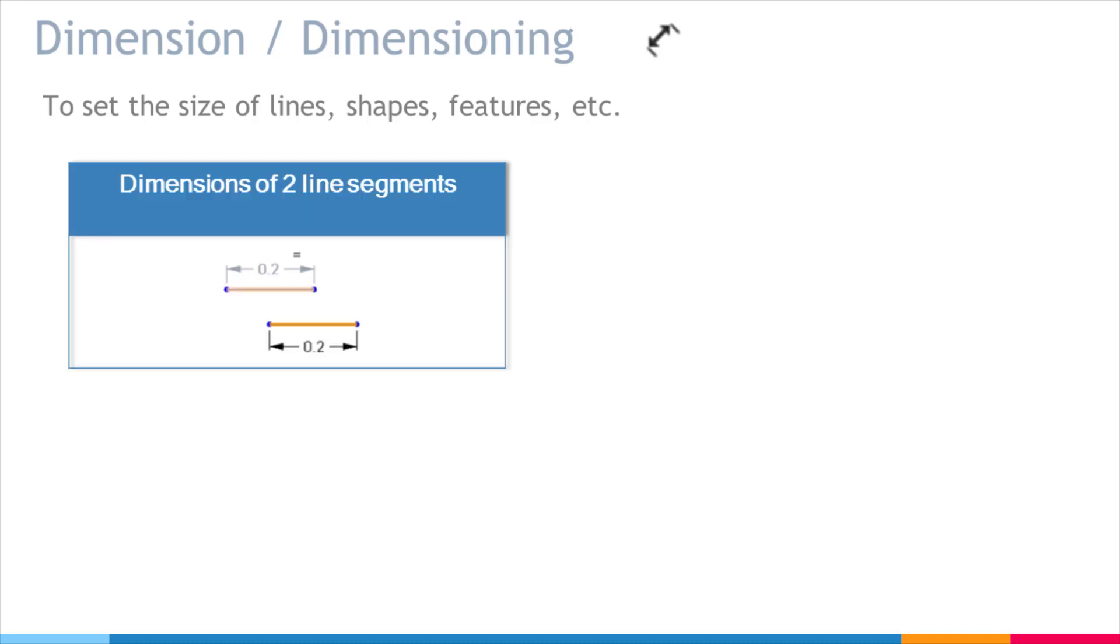So on this first box here we have two line segments in orange and each of the line segments is connecting two dots and you can see the dimension symbol, one in gray and one in black, and this is how you'll see it in Onshape as well. And so both of these line segments are 0.2 inches. You could also say that the distance between the two points is 0.2 inches.